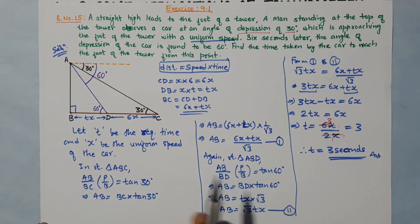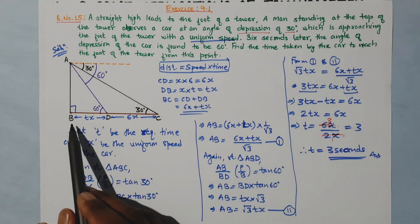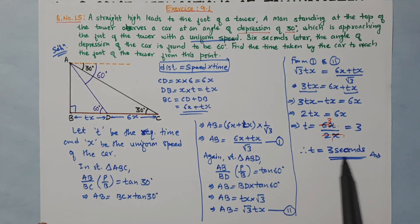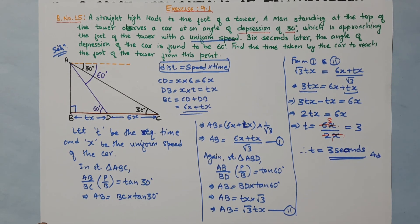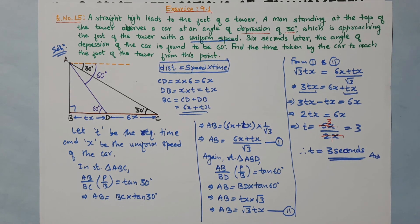That means the car reaches from position D to the foot of the tower B in 3 seconds. This is our answer for question number 15. The remaining questions we will do in our next class. Till then, keep practicing, and thank you very much.